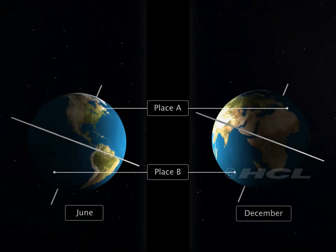Now, the earth is also revolving around the sun. After six months, the lower part of the earth is tilted towards the sun and the upper half is tilted away from the sun.